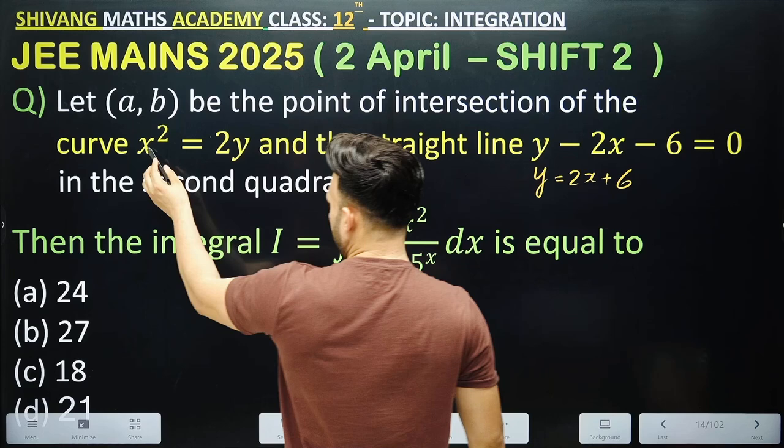Replacing x with -x, the limits remain -2 to 2. The integrand becomes 9x²/(1 + 5^(-x)). We write this expression and then add both forms to complete the solution.